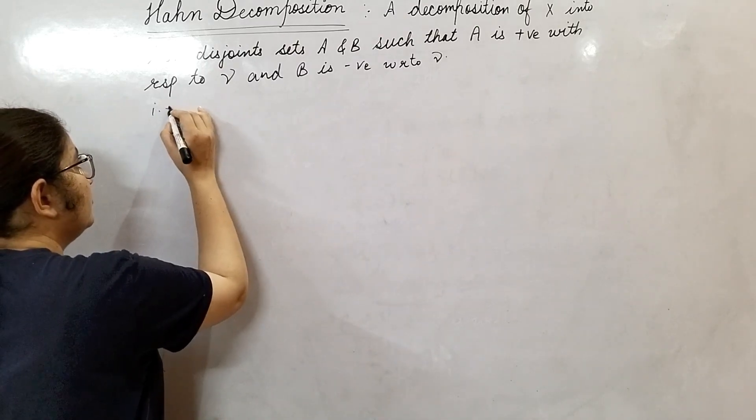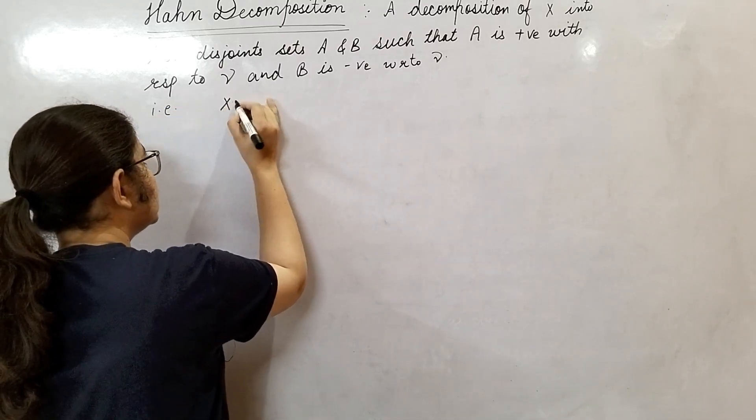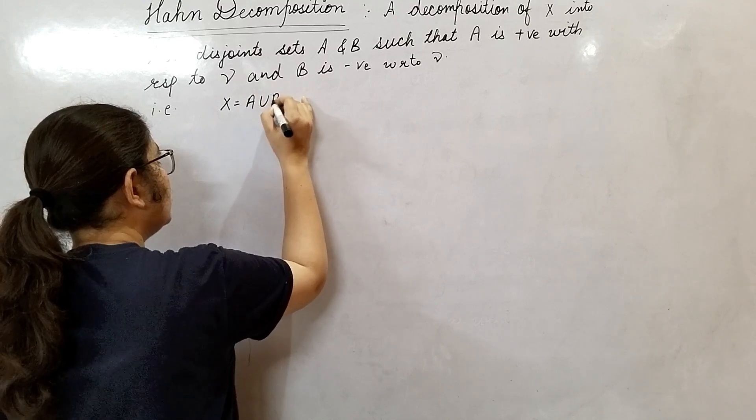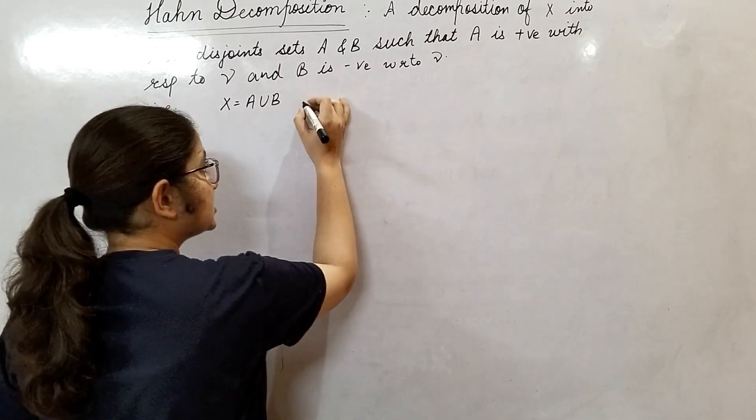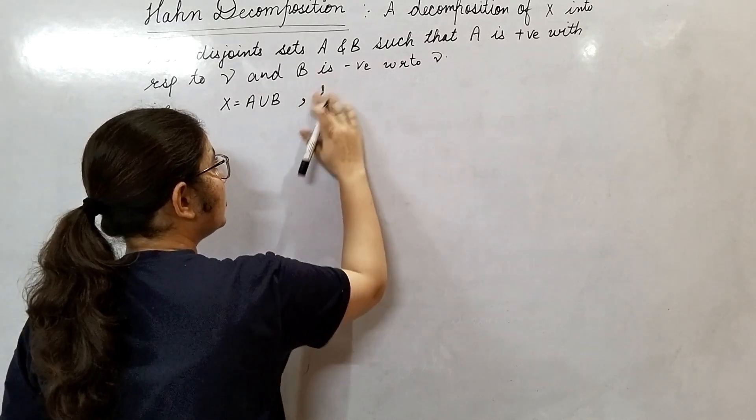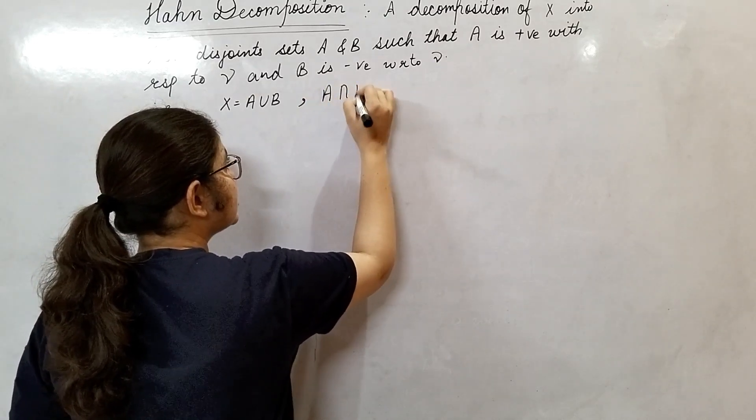That is, mathematically, how will we write? X equals to A union B. Decomposition of what? X, into two sets. Between the sets, such that A intersection B...